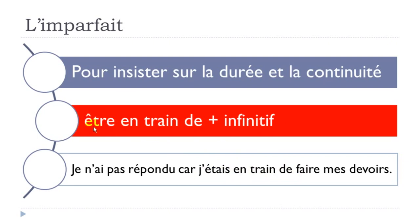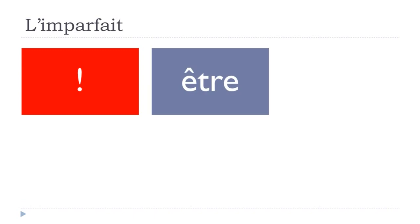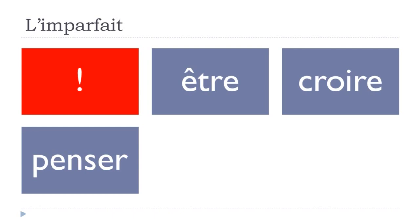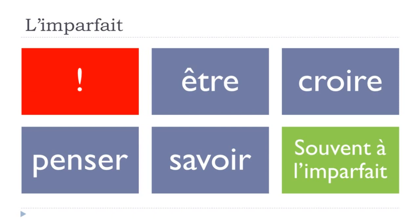One important thing to keep in mind: the verbs 'être' (to be), 'croire' (to believe), 'penser' (to think), and 'savoir' (to know) are often — not always, but often — used in the imparfait form.